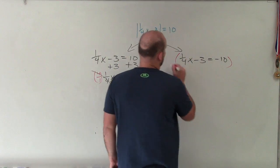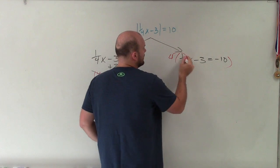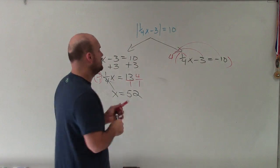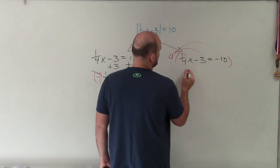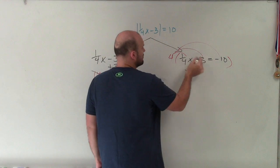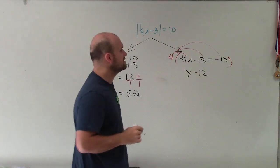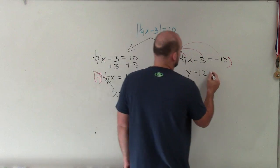So I'll multiply everything by 4. And I multiply every single term by 4, which is very, very important. So 4 times 1/4 is just going to leave me with x. 4 times negative 3 leaves me with a negative 12. And 4 times negative 10 is equal to a negative 40.